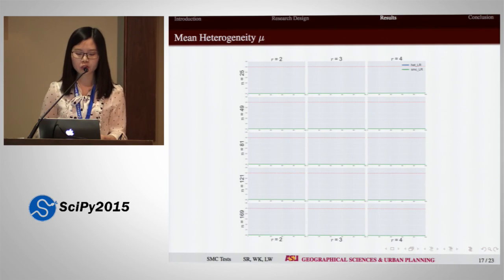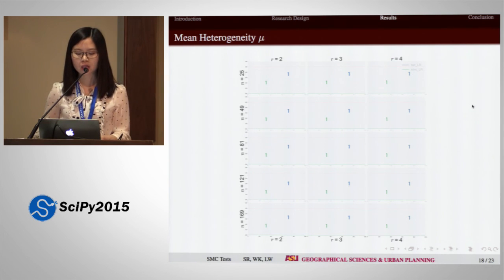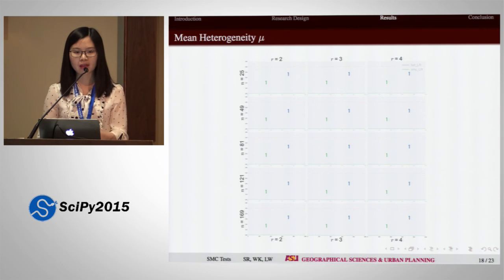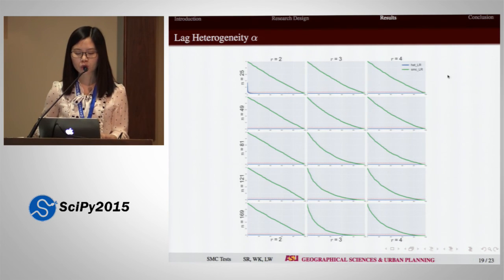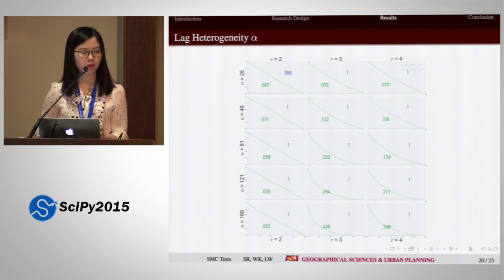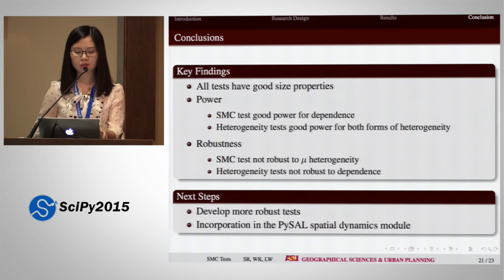With regards to spatial heterogeneity, the test has excellent power to detect mean heterogeneity, but the spatial dependence test is not robust to this alternative — and this effect is even more pronounced than the reverse case. When spatial heterogeneity is reflected in the temporal lag coefficient alpha (lag heterogeneity), the test has good power to detect it, and the spatial dependence test is also robust to lag heterogeneity. In other words, the form of heterogeneity matters.